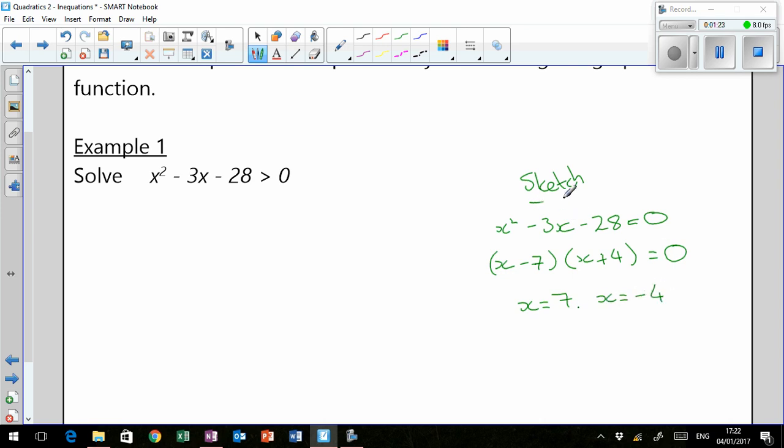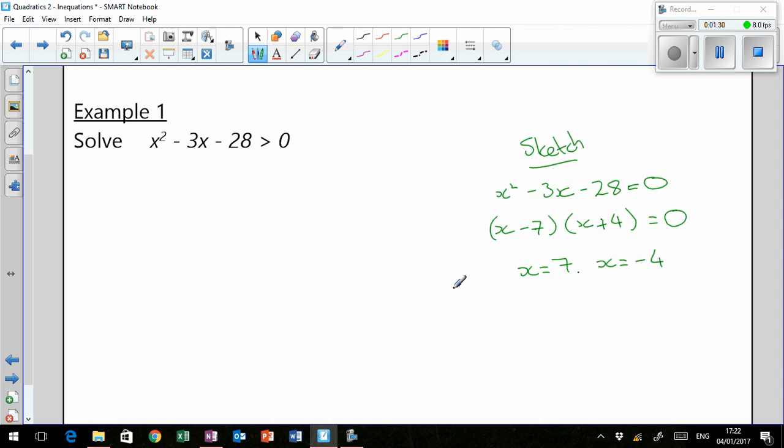So, for your sketch, you know you're dealing with a positive parabola. You know that in terms of the x-axis, you've got a smiley face with the two solutions at minus four and seven.